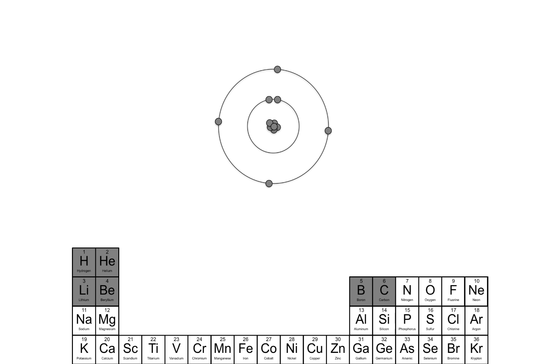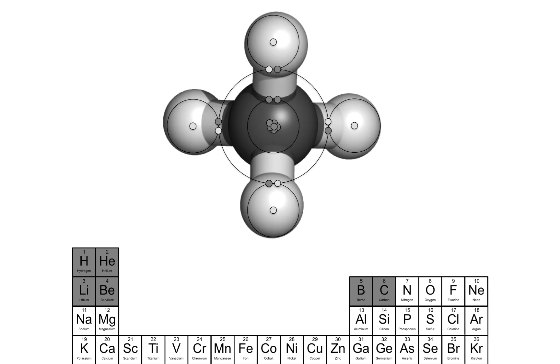You may already see where we're going with this. Since lone electrons prefer to pair up, other atoms with lone electrons, in this case the four hydrogen atoms, can form four bonds with the carbon. This molecule is called methane and is an important fossil fuel.